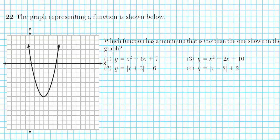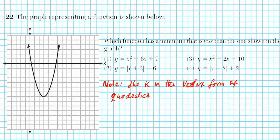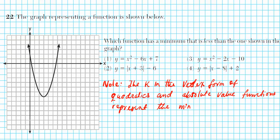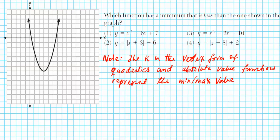Let's look at question 22. The graph representing a function is shown, and we need to find which function has a minimum that is less than the one shown in the graph. One key thing to note is that the k value in the vertex form of quadratics and absolute value functions represents the max or min value, depending on whether the curve opens up or down. So we need to find which option has a k value smaller than the minimum of the given graph. Let's figure out what the minimum is by locating the vertex.